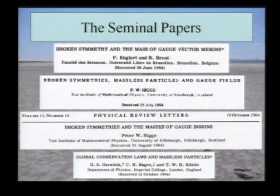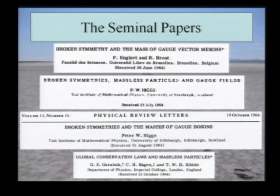That was the general historical context back in 1964 when this series of papers appeared. Chronologically, the first one was by Englert and Brout — interestingly, not by Brout and Englert. Then there were a couple of papers by Peter Higgs, and then in the autumn of the same year there was a paper by Guralnik, Hagen, and Kibble. I'd like to discuss what is actually in these different papers and how they differ and overlap.